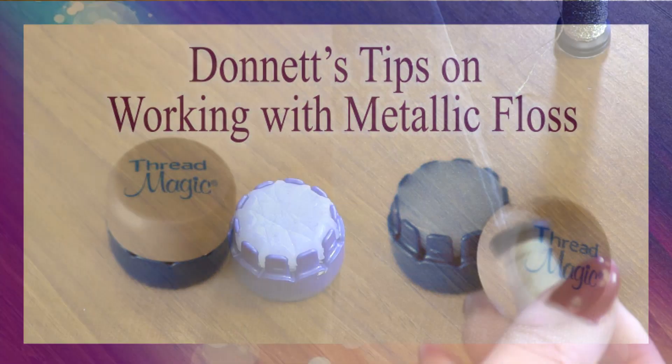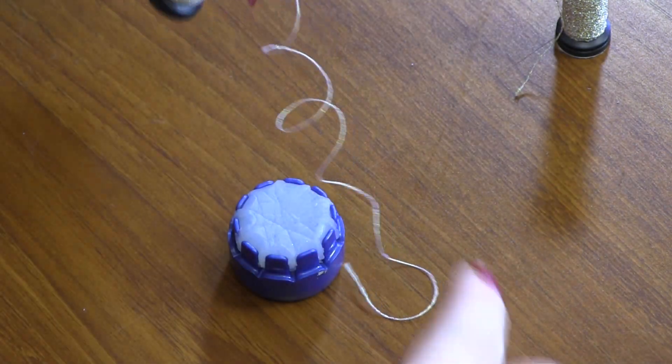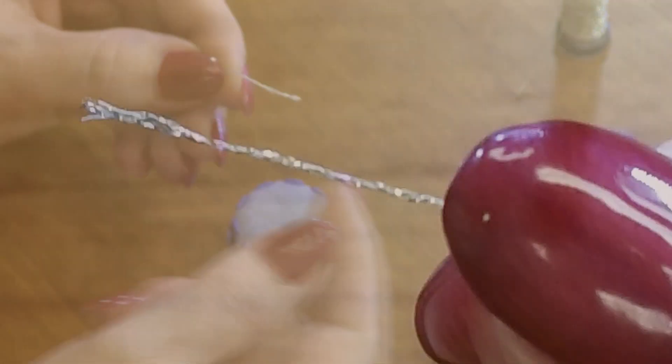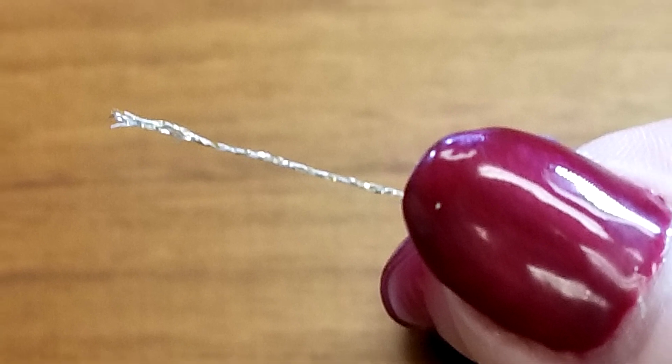Working with metallic thread can be challenging. It likes to keep its shape, the swirls and bends from the spool or card it was on. Metallic floss is also made up of many different fibers, and they all want to go their own way.